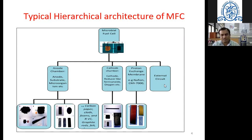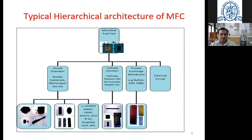The fourth component is the external circuit. Depending on requirements, we may add direct resistance, LEDs, or external circuits for measuring closed circuit voltage. Our ultimate aim should be to add resistors like CFL bulbs or LED bulbs or other electricity sources, so we can understand how much power is generated and utilized in this MFC.